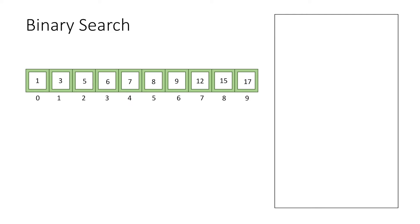Now let's understand how binary search works. Suppose this is the array given to us and we are looking for the element 8. We can only perform binary search when the collection of elements is sorted, and as we can see, the example we have taken is sorted in ascending order.